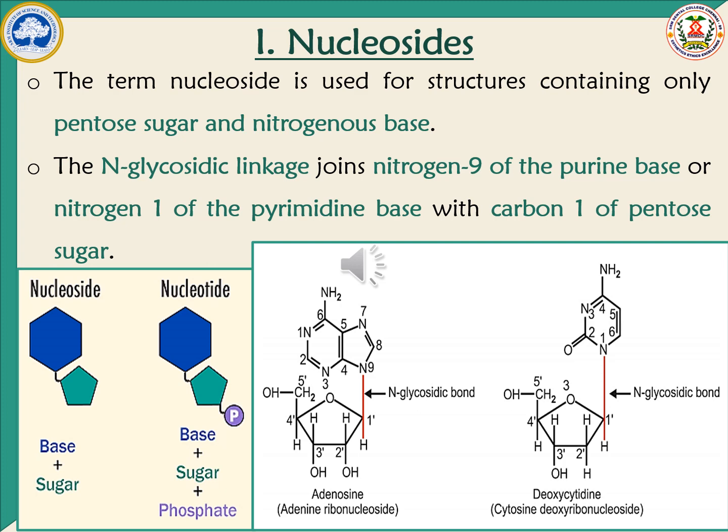This structure is called a nucleoside. When a phosphate group is attached to the nucleoside, it is called a nucleotide. So a nucleoside consists of pentose sugar and nitrogenous base, whereas a nucleotide consists of pentose sugar, nitrogenous base, and phosphate. Base plus sugar gives nucleoside; base plus sugar plus phosphate gives nucleotide.